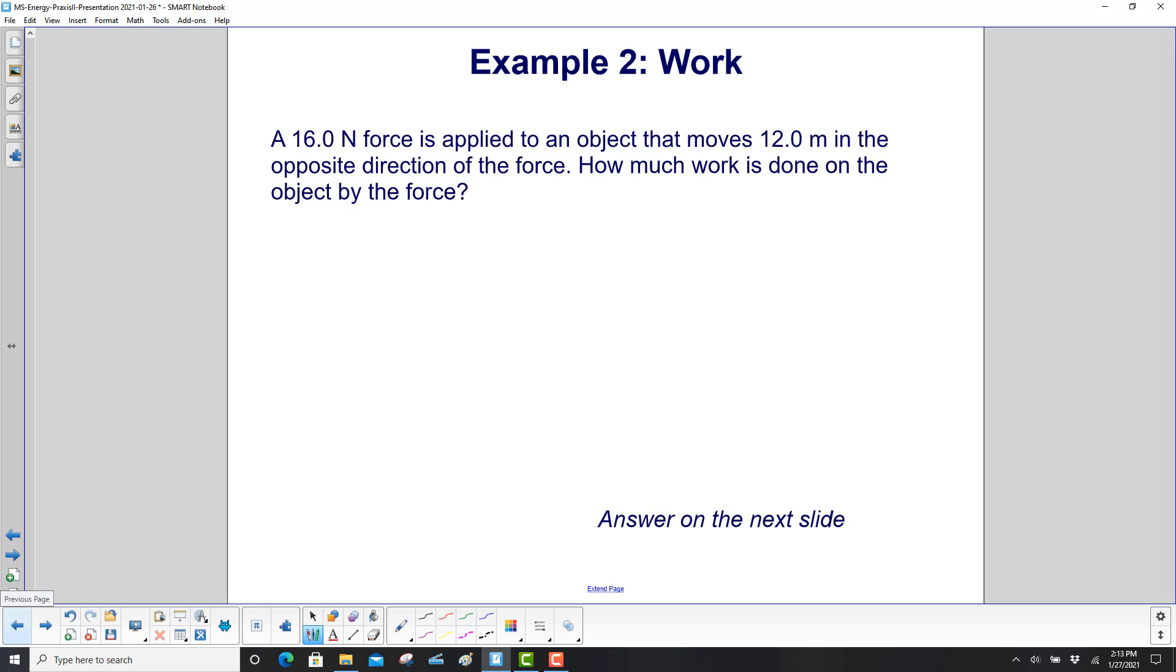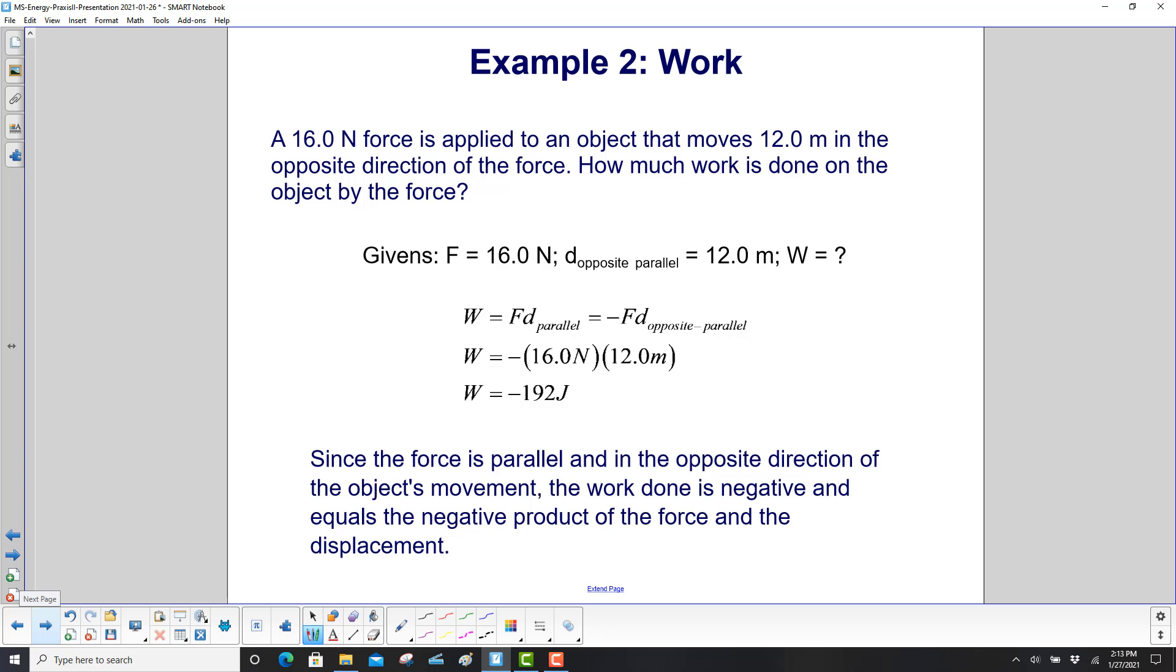A 16 newton force is applied to an object that moves 12 meters in the opposite direction of the force. How much work is done on the object by the force? We write our givens. Got to be a little careful this time. We have a force of 16 newtons, and then we have a displacement that's still parallel, but in the opposite direction of the force, and that's 12 meters, and we need to find the work. So work is equal to force times distance parallel, or the negative of the force that is still parallel but in the opposite direction. Remember, if the force is opposite the displacement, we're going to get negative work. So we have work is minus 16 newtons times 12 meters, and we get a work of negative 192 joules. So since the force is parallel and in the opposite direction of the object's movement, the work done is negative and equals the negative product of the force and the displacement.